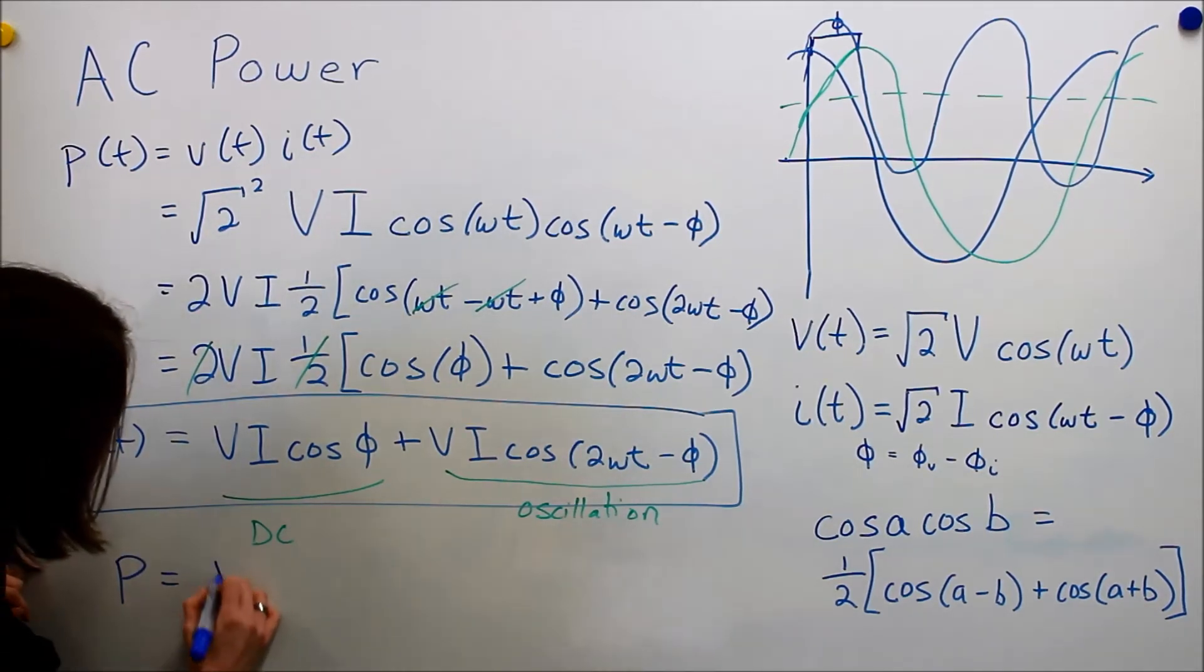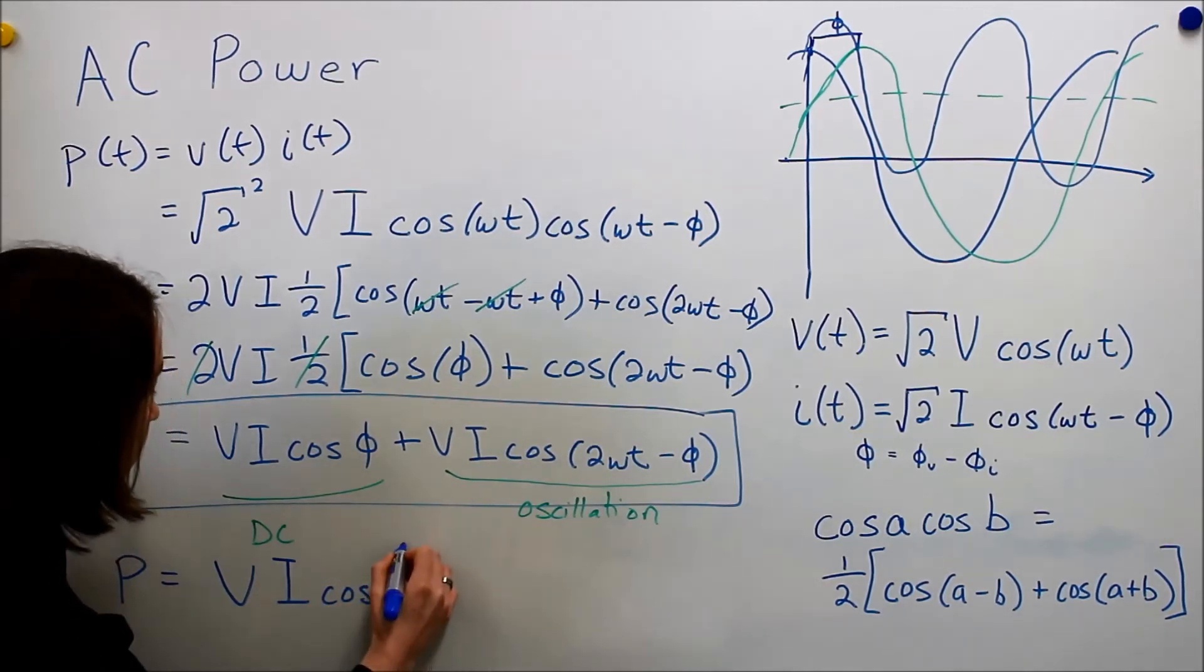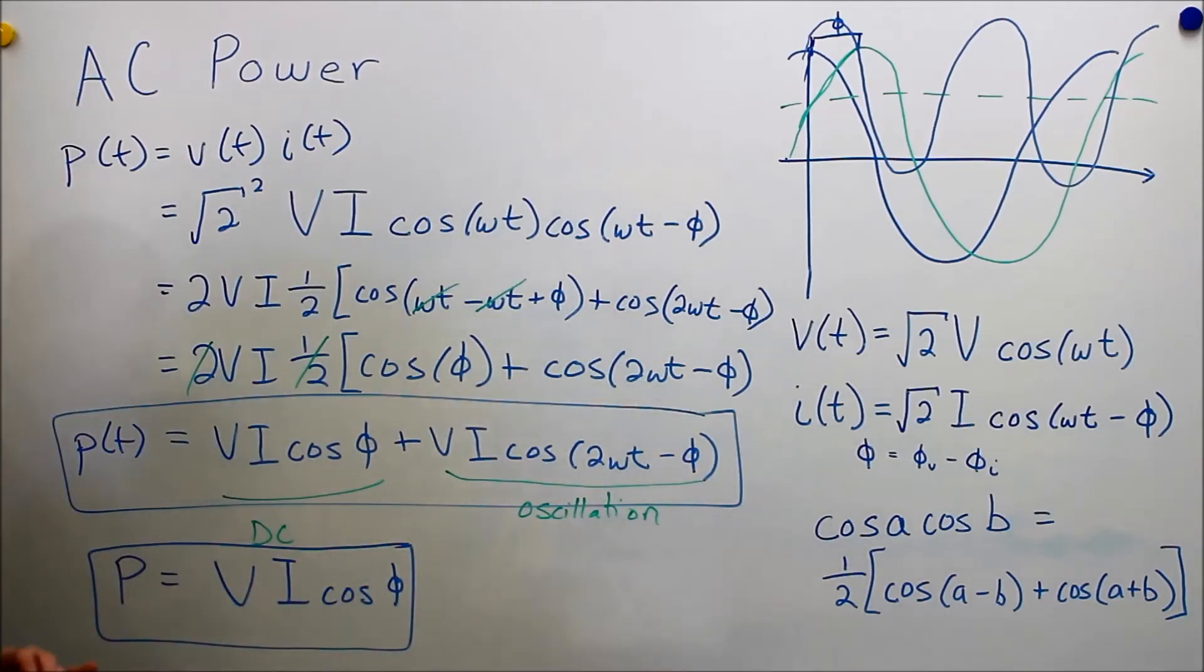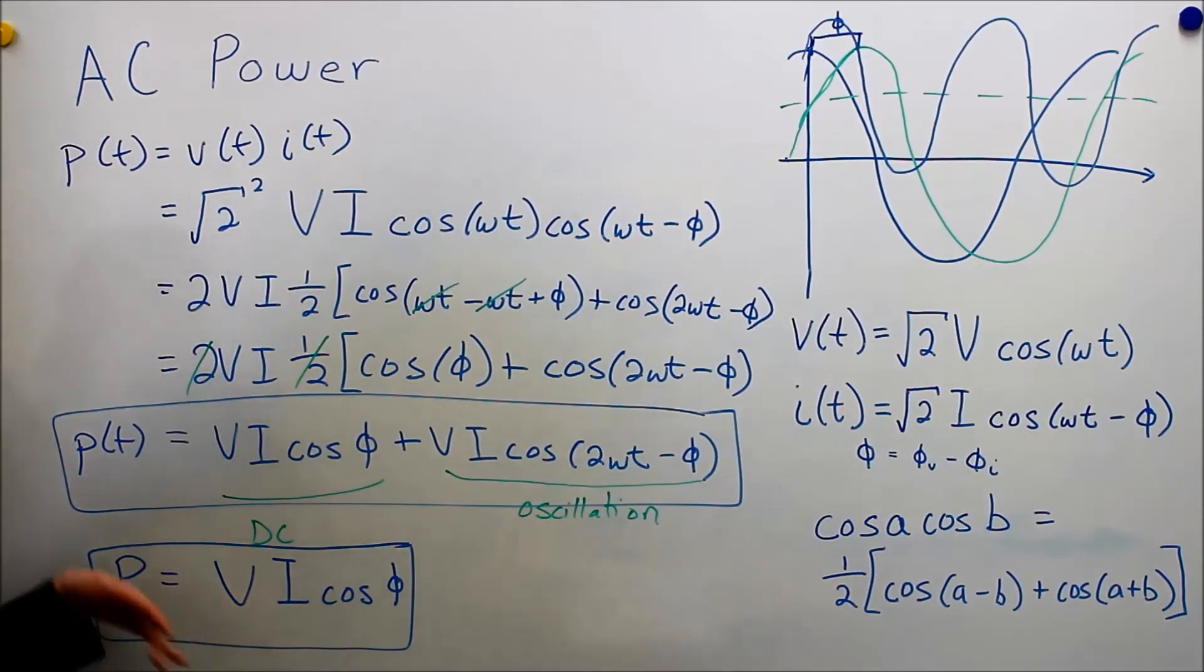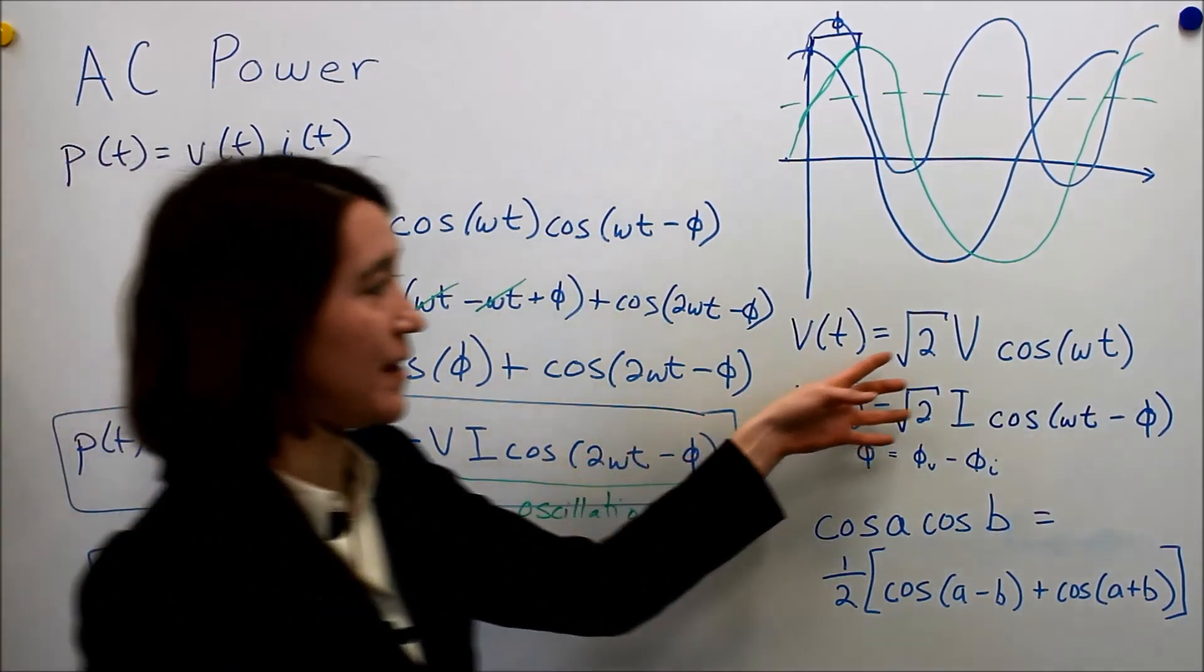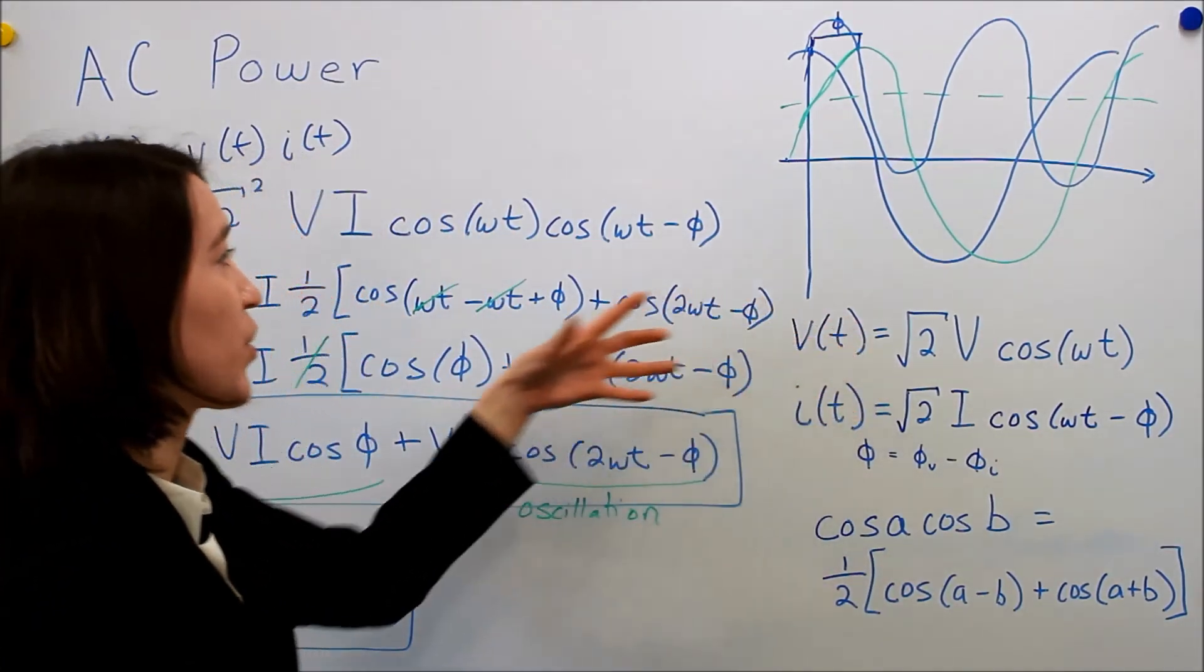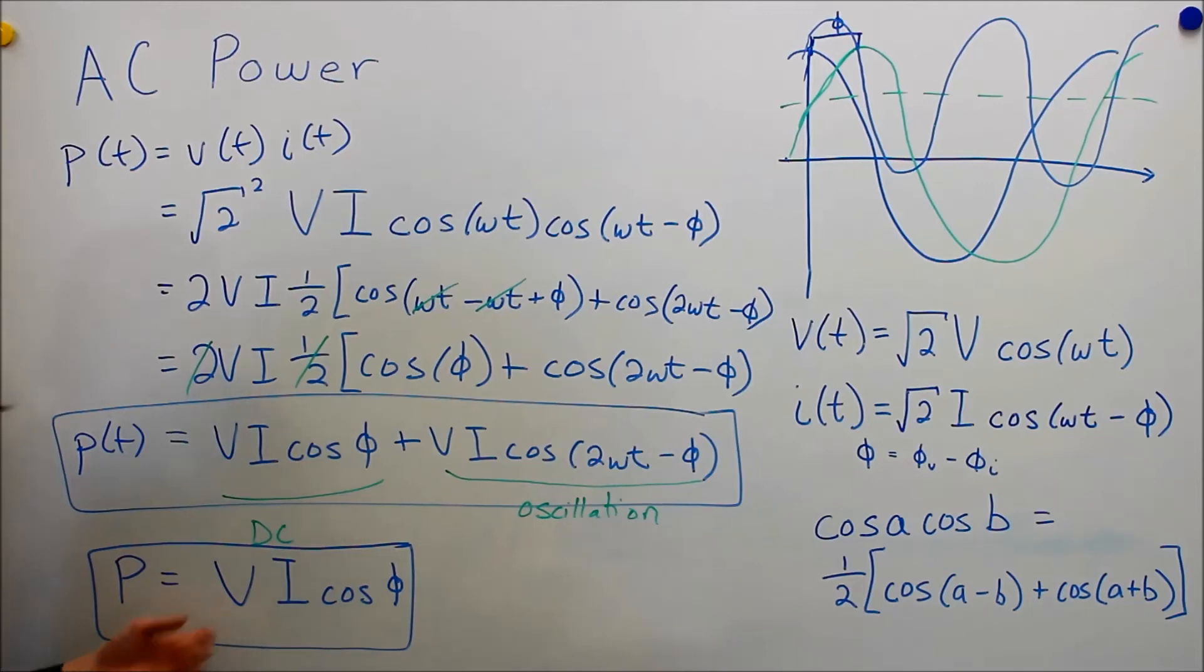So the power, the average power, is actually v, i, and then the cosine of our phase difference. So this is why we use RMS values, is because when we do the power calculations, we see that we get the RMS values very nicely right here. If we were to write these as non-RMS, we would have to do a little bit more math. We see when we multiply them out, we get these nice values. So that's why we use the RMS values for power.